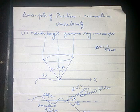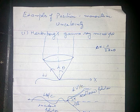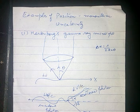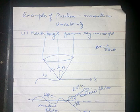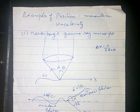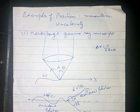Today we will be discussing an example of position-momentum uncertainty. The first example is Heisenberg's gamma ray microscope.